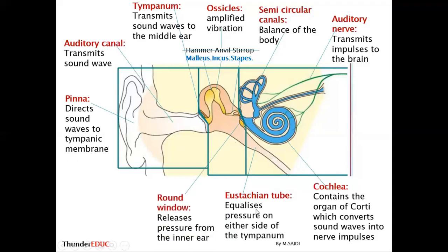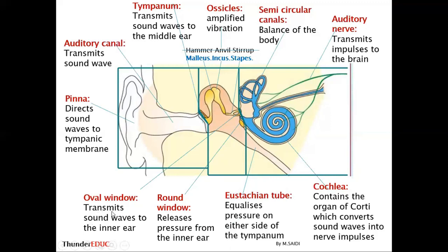The round window is important in absorbing pressure from the inner ear. When vibration enters the cochlea, some pressure must be sent back as not all of it is used — this excess pressure is absorbed by the round window. The oval window transmits sound vibration to the inner ear, so it is important in transmitting vibration from the middle ear to the inner ear.